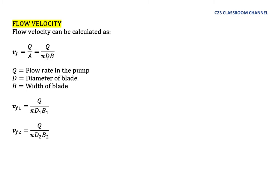Here Q is flow rate in the pump, D is diameter of blade, and B is width of blade. Because we have diameter and blade width here, please make sure that when you calculate the velocity of flow at inlet vf1, you will use diameter 1 and width 1, and the equation becomes Q over πD1B1. If you calculate flow velocity at outlet, the equation becomes Q over πD2B2.